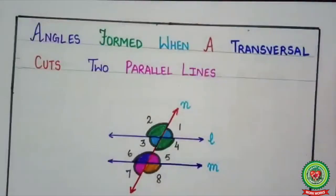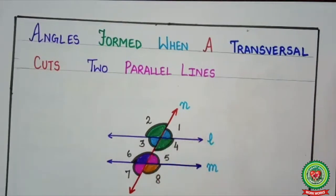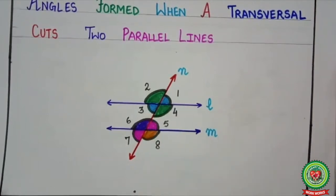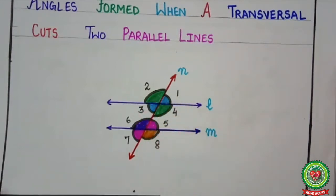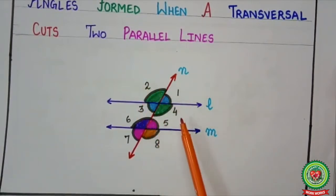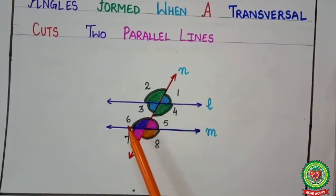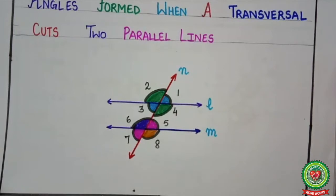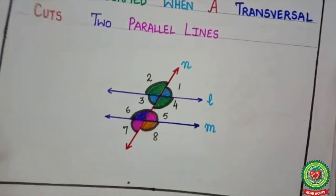As we know, 8 angles are formed when a transversal cuts 2 parallel lines. I have told you that the marking of angles will be done anticlockwise, so here it comes: 1, 2, 3, 4, 5, 6, 7, 8. Today we will learn that if any one of these 8 angles is given, how you will find the rest of the angles. Let's understand with examples.